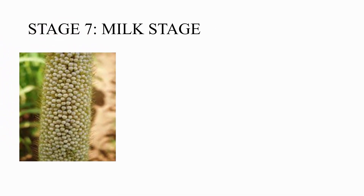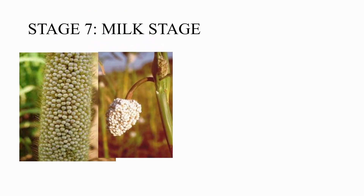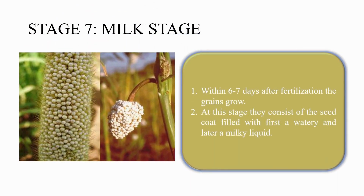The seventh stage is the milk stage. The seeds first show a watery consistency and later become a milky liquid consistency. This change occurs six to seven days after fertilization, as the grain grows and develops from a watery to a milky liquid substance.